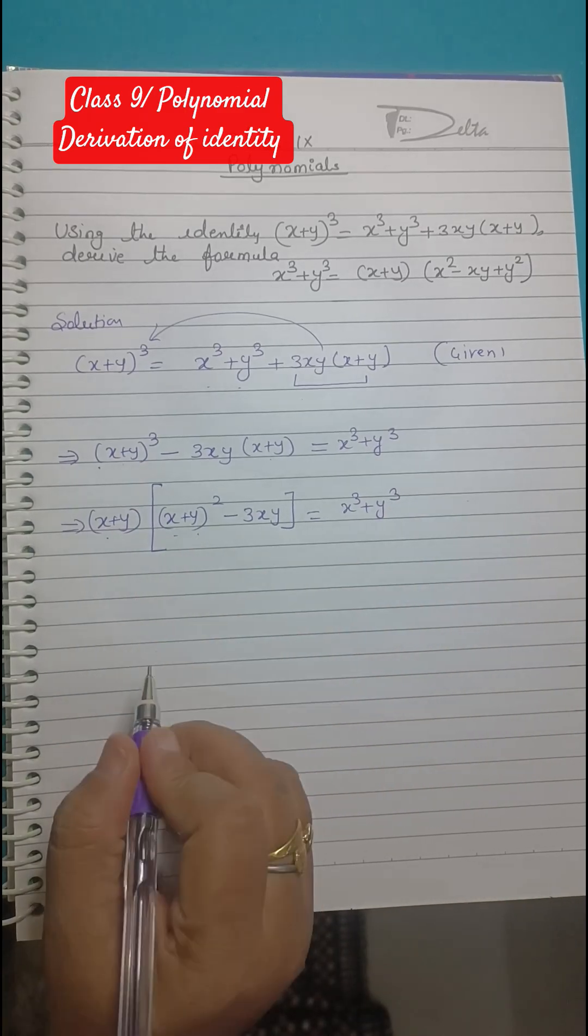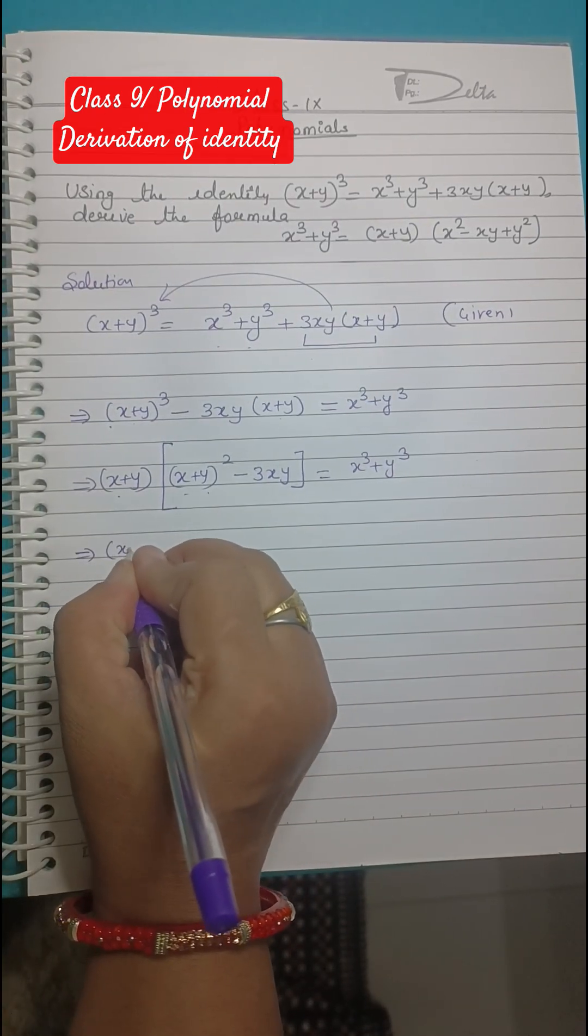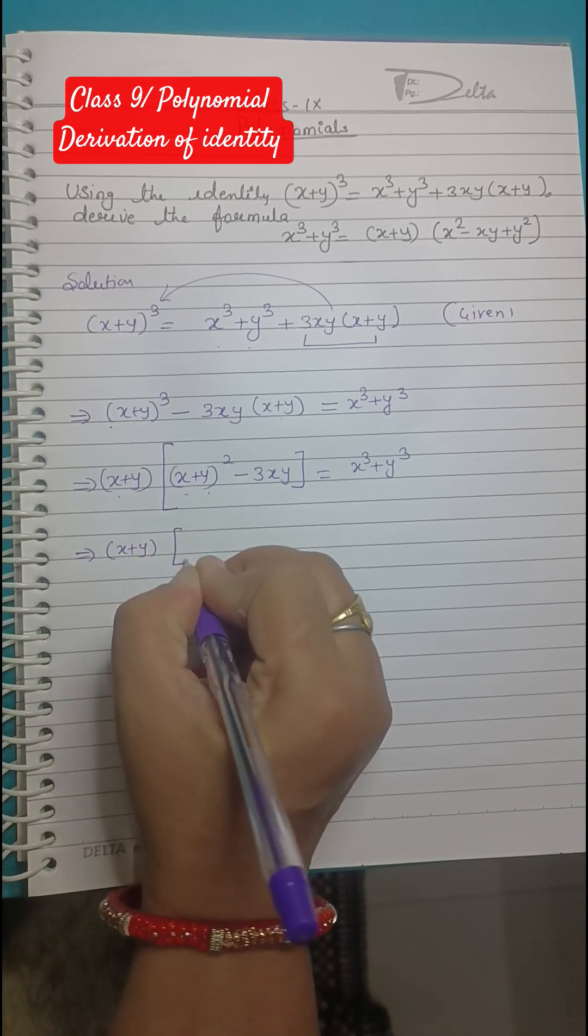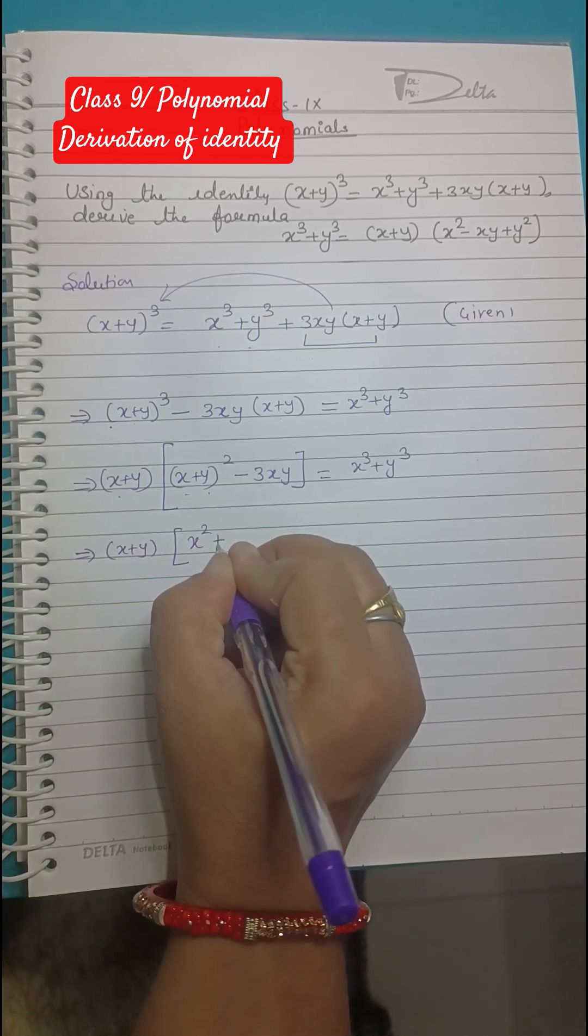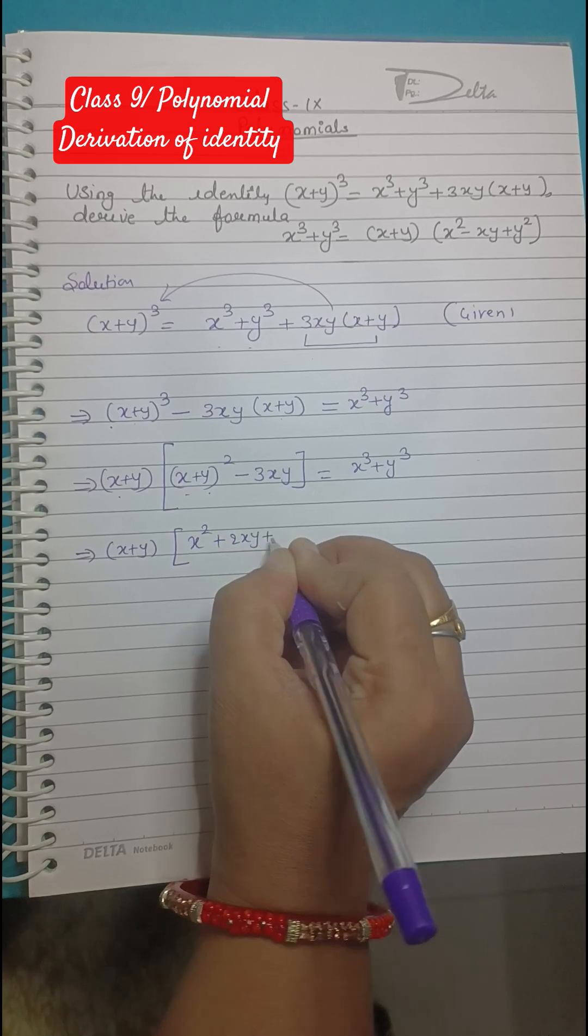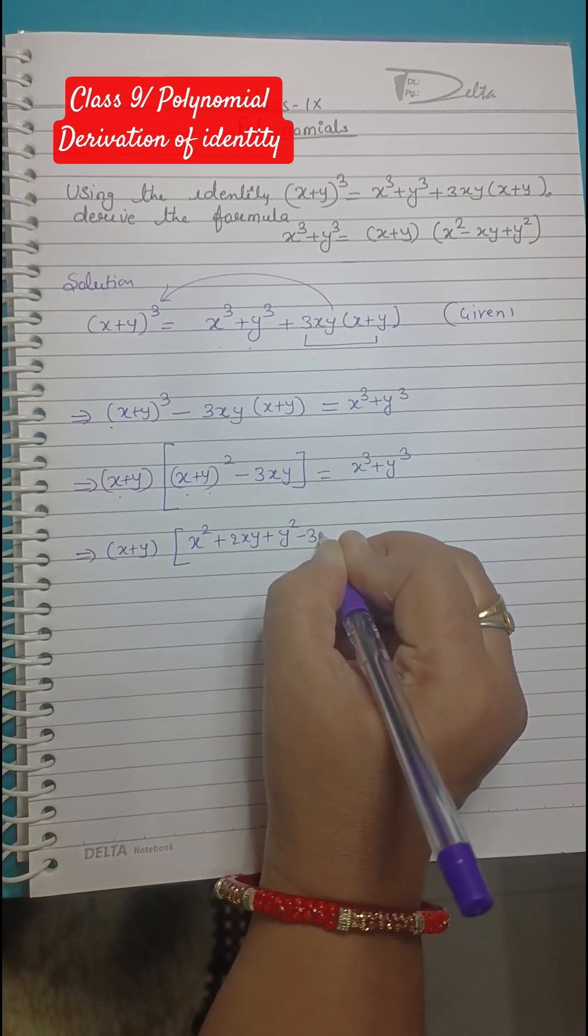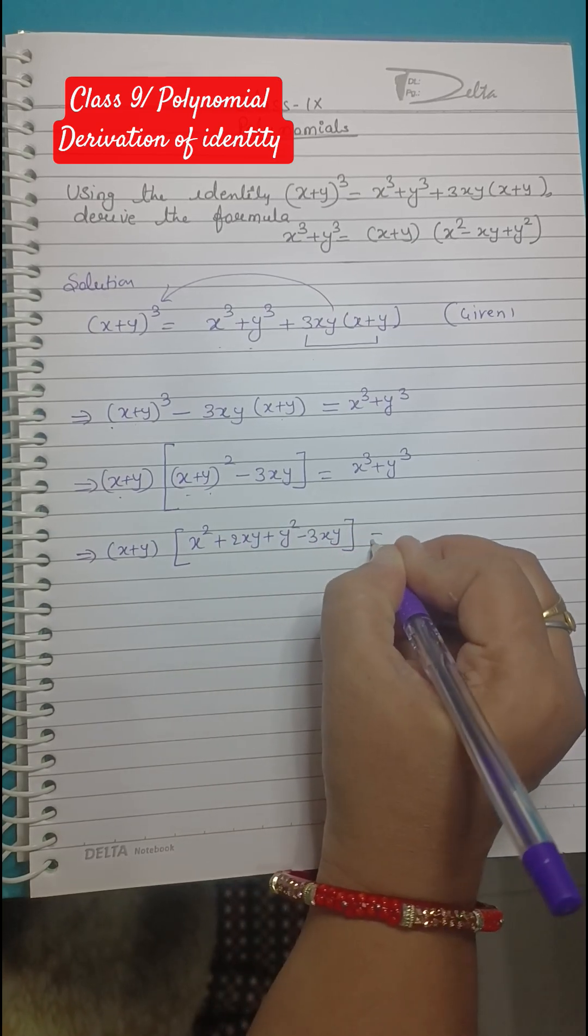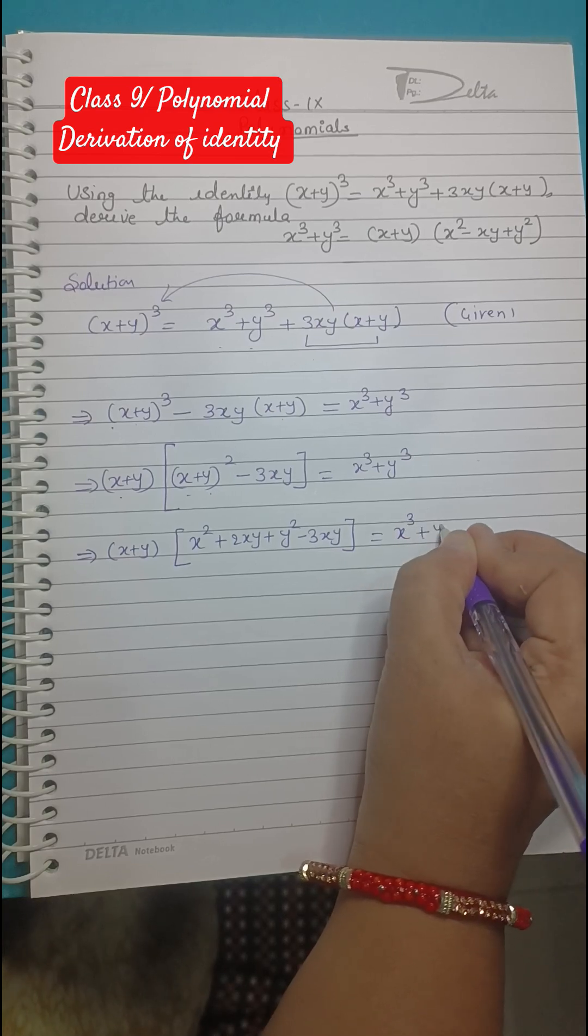Now this is the identity (a+b)². Just open it: (x+y)[x² + 2xy + y² - 3xy] = x³ + y³.